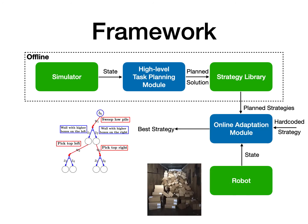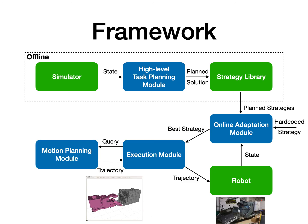At runtime, we have an online adaptation module that reads in the current perception of the world from the robot and picks the best strategy from the strategy library according to the current box configuration. At the same time, we also decide whether to execute the best planned strategy or a hard-coded strategy designed by a domain expert. This allows us to introduce domain knowledge and ensures our performance is never worse than that of a domain expert.